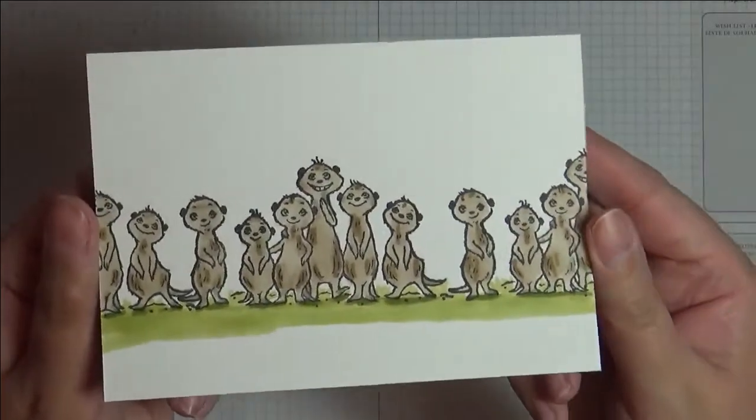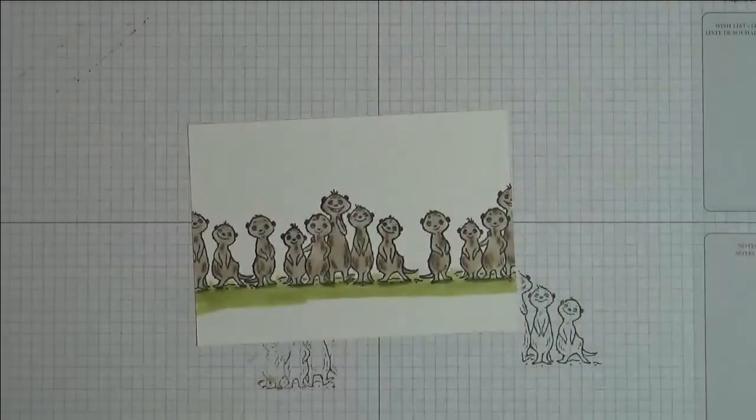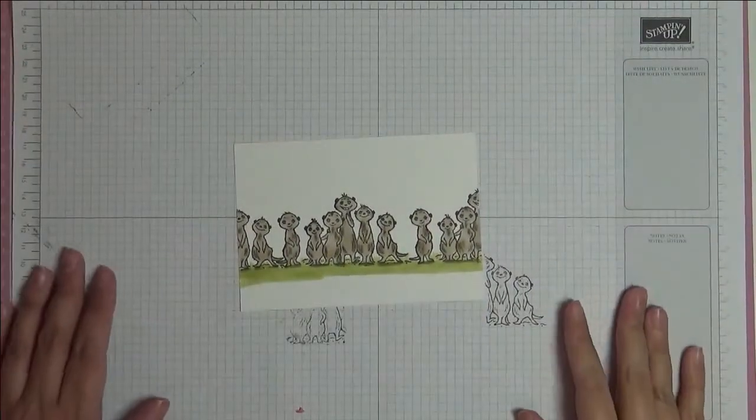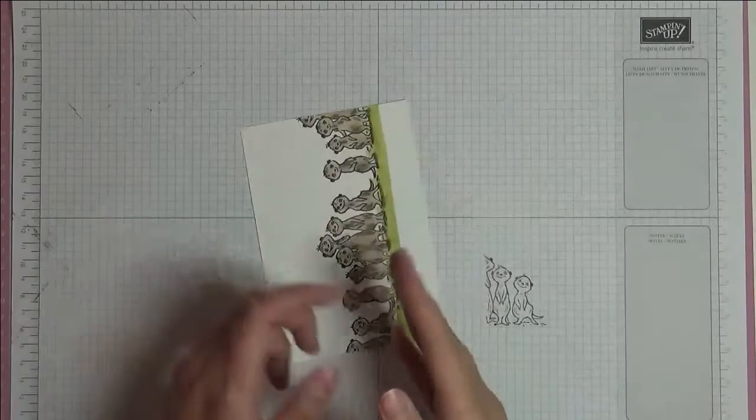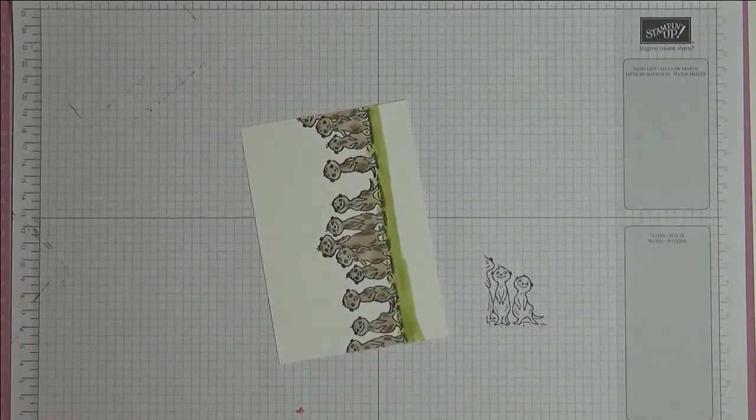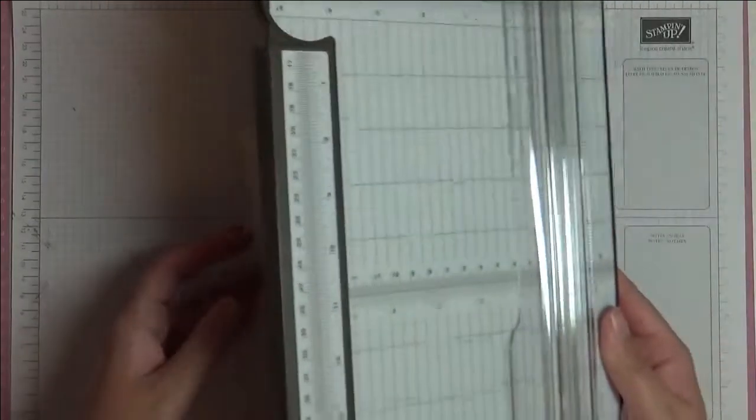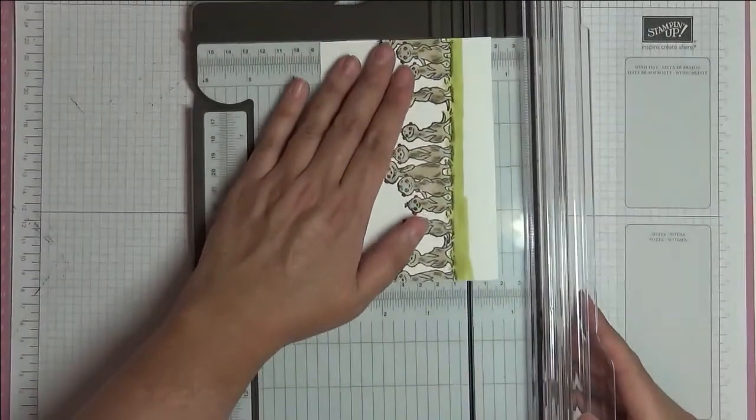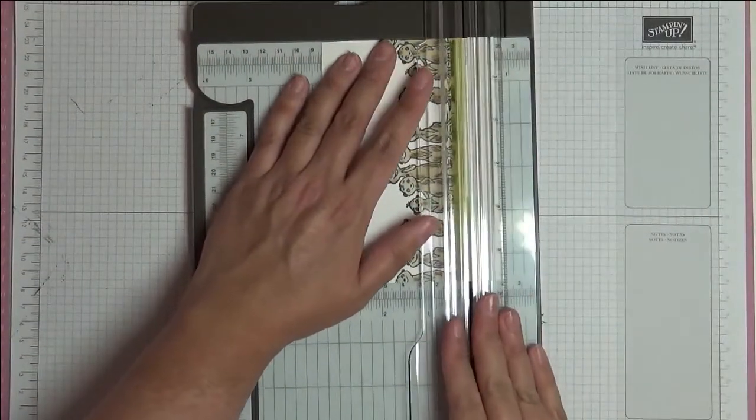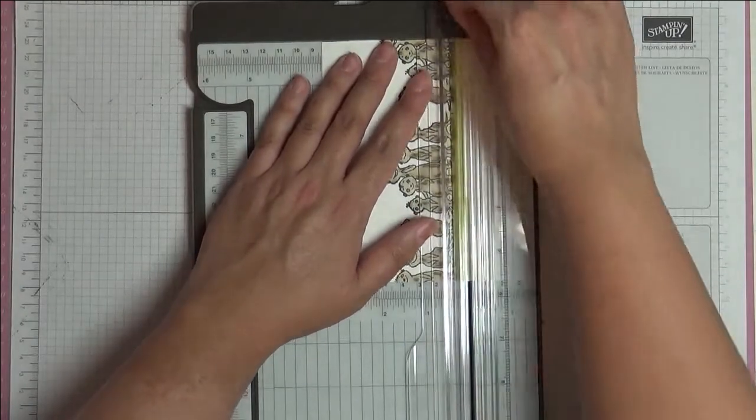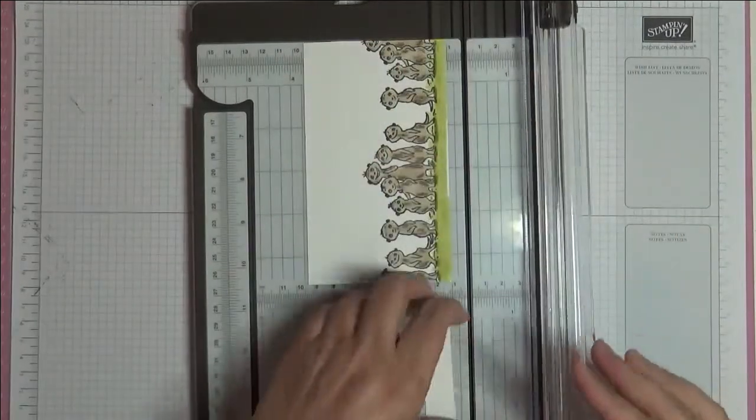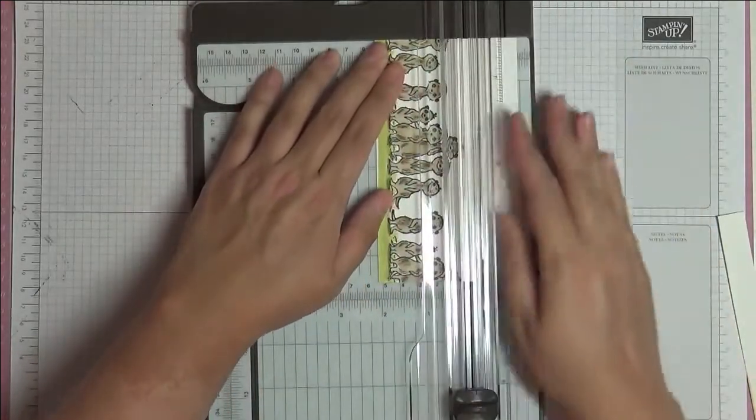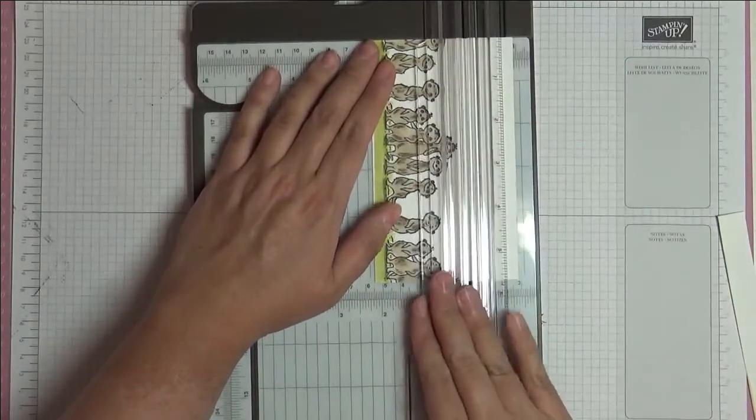So there we have everything colored in, as you can see. Now we're just going to cut this off into a strip. I'm going to use our new paper trimmer that came out in this catalog. There's no right or wrong way to do this, so I'm just going to eyeball it. I'll take off a bit there, and then take off a bit along the top as well, making sure we don't chop anybody's heads off.